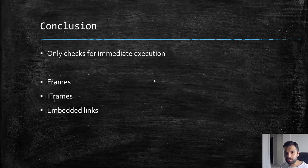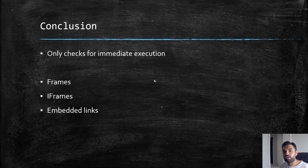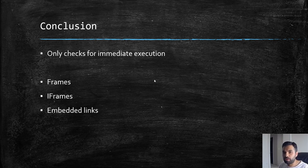Think of it like going to an airport: you go through the screening process, and once you pass it you are marked as trusted. When you reach the gate or change terminals, they will not screen you again because you've already gone through the screening and been marked trusted. In this same scenario, we are able to use that behavior to bypass the filter rules we saw in the previous video.